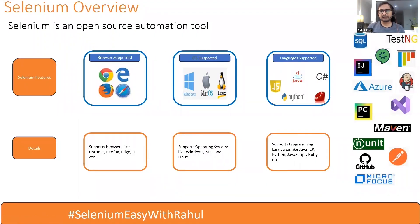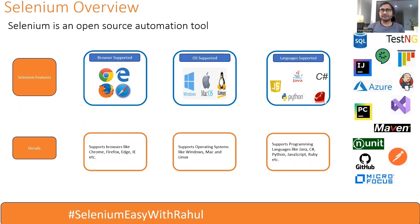As we know, Selenium is an open source automation tool, and that is the reason most organizations are inclined to it. Earlier there was a tool named UFT which was very popular three or four years ago, but it was a paid tool. Now Selenium is the top priority for many organizations.